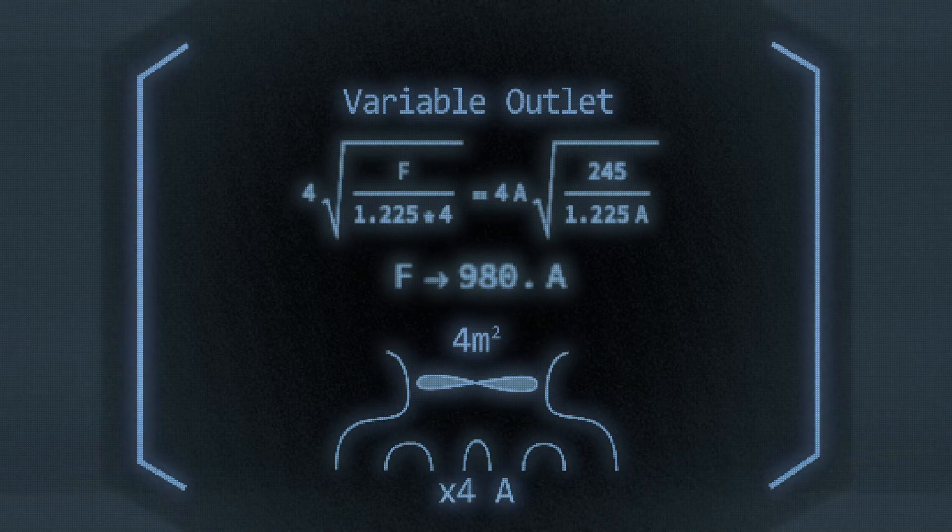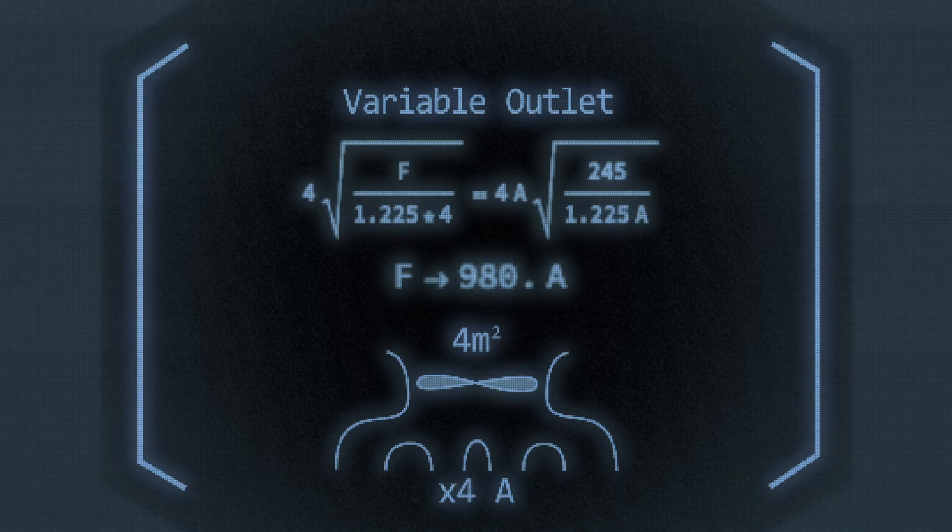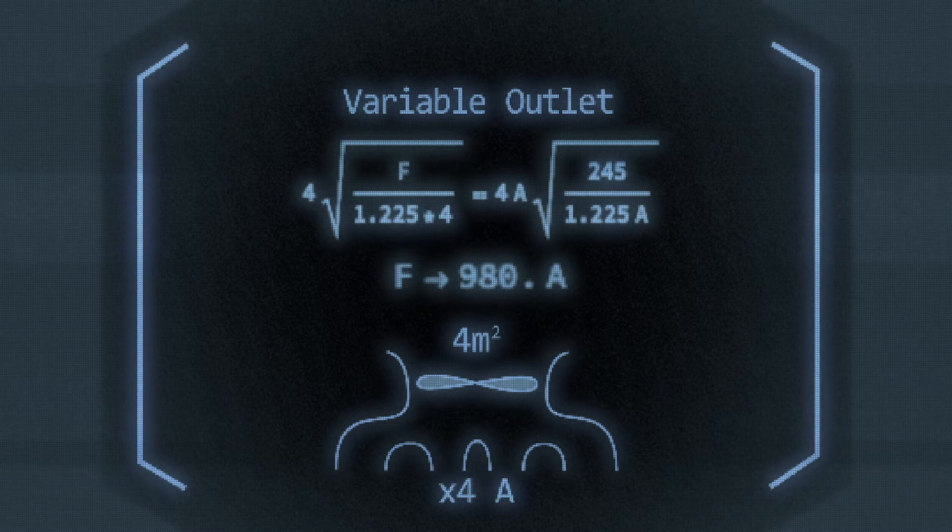If I switch it to having the inlet be four square meters to maintain the same ratio and the outlets be a variable area, the equation for this is F equals 980 times the outlet area.